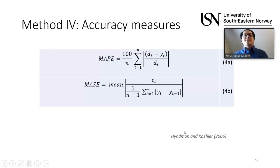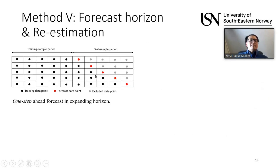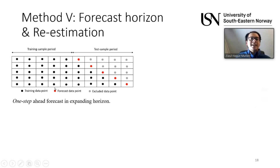What I mean by re-estimation and recursive forecast horizon: we have a time series divided into training and test samples. We use data up to a certain point to forecast the next point, and then when a new data point is available, we use all data up to that new point to forecast the following one. This is called a recursive horizon, also known as a static forecast approach.